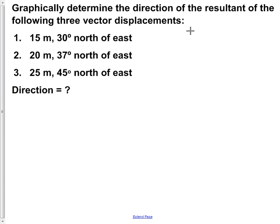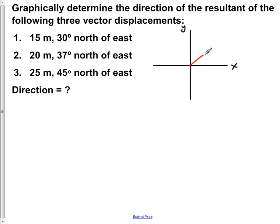The first thing we're going to do is give a graphical representation of these three vectors being added together. Here's our axis — x going in this direction and y vertically up. Now we're going to draw in the vectors. Vector 1, shown in red, is 15 meters and makes an angle of 30 degrees with the x-axis.